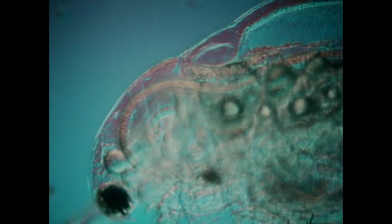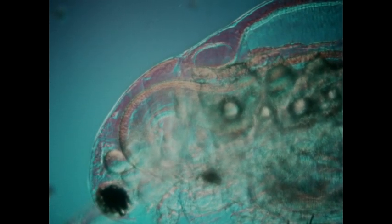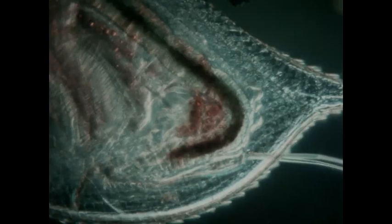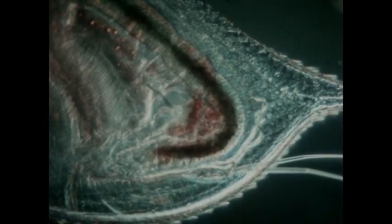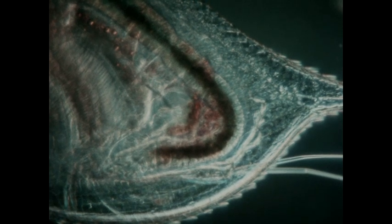A daphnia's heart pumps clear circulatory fluid through its body. The blood cells we see are leukocytes, white blood cells. They have the same function as leukocytes in humans, providing immunity and engulfing harmful bacteria.